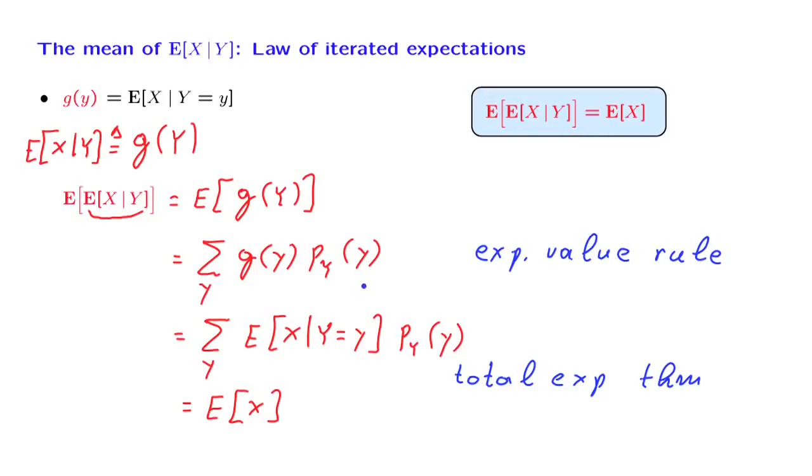As the proof indicates, the law of iterated expectations is nothing but an abstract version of the total expectation theorem. It is really the total expectation theorem written in more abstract notation. But this turns out to be powerful, and also, we avoid having to deal separately with discrete or continuous random variables.